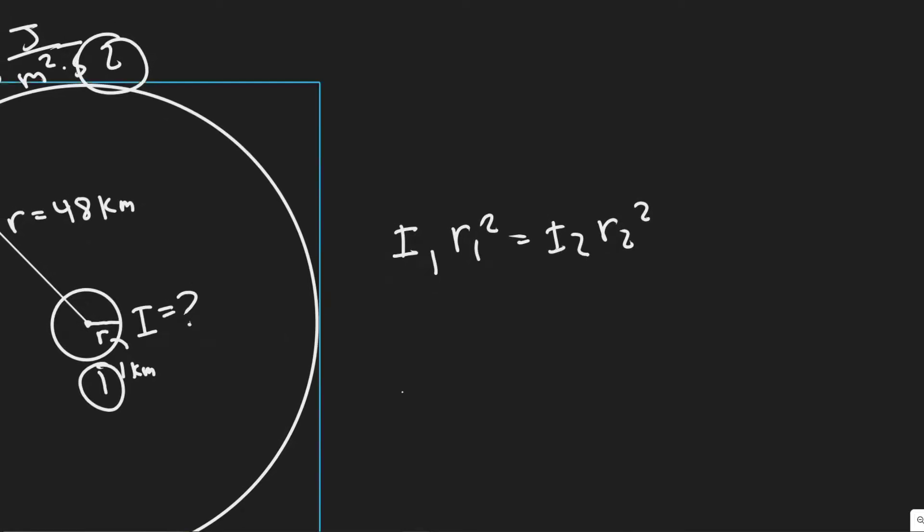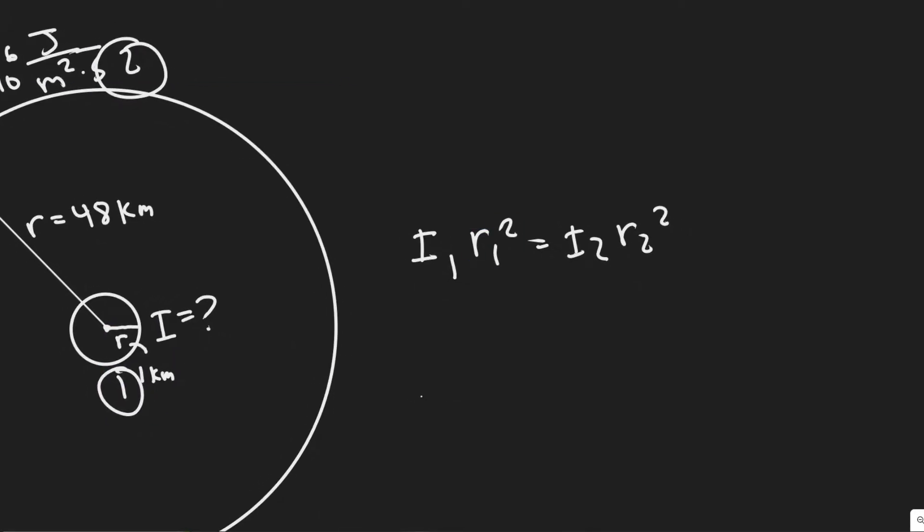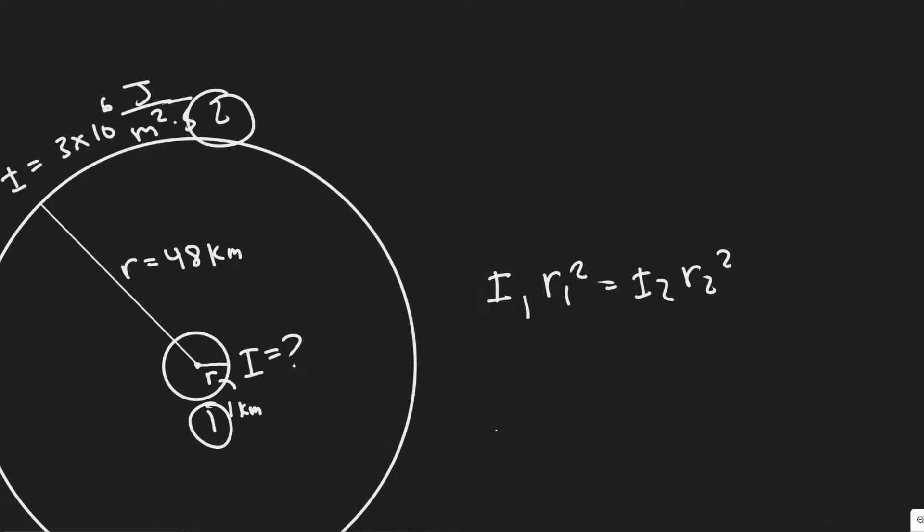And so notice, if we set this to be point 1 and this to be point 2, R1 would be the radius at point 1, which is 1 kilometer. I2 would be the intensity, 3 times 10 to the 6. And the radius would be the radius at point 2, 48 kilometers.